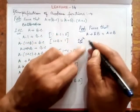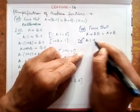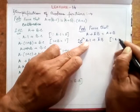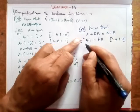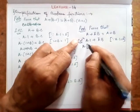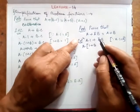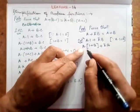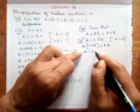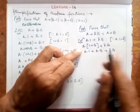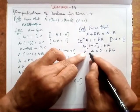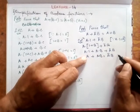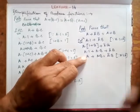Looking at the left hand side, I write a as a·1, so: a·1 plus ā·b. The reason is a·1 equals a. Now this 1 I write as 1 plus b, because 1 plus b equals 1. So: a·(1 plus b) plus ā·b, which expands to a·1 plus a·b plus ā·b. And a·1 is simply a, giving a plus a·b plus ā·b.